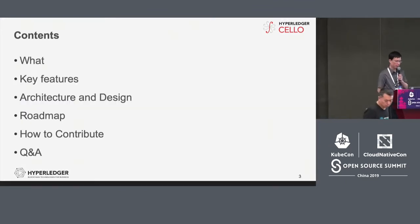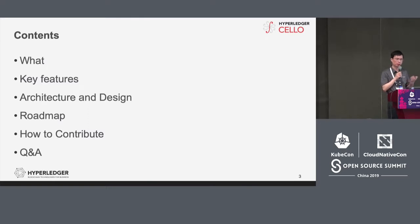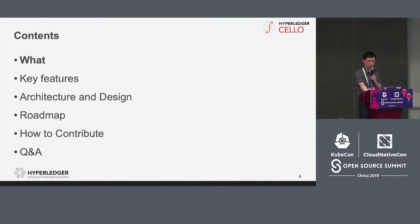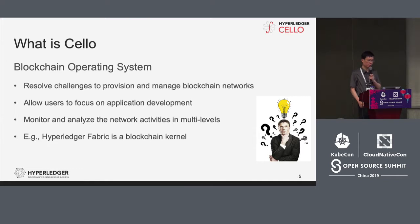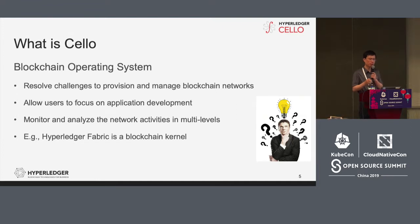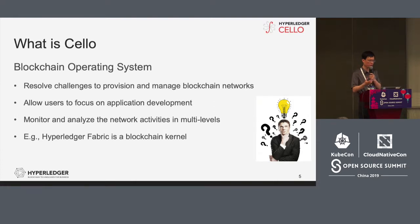Now we start with the presentation. There are several parts: the first part is what is channel, what are the key features, the roadmap and architecture, and how to contribute, and then Q&A. Channel is for the aim of helping with the operation and management of blockchain. It is the operating system of blockchain. We know the operating system is for the management of hardware and software resources.